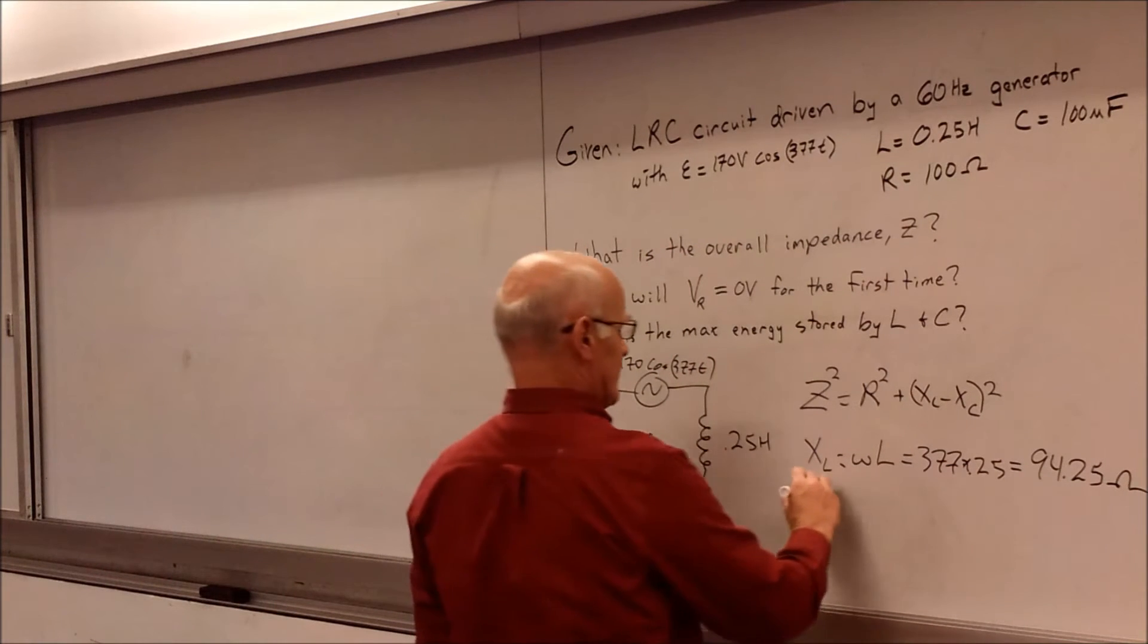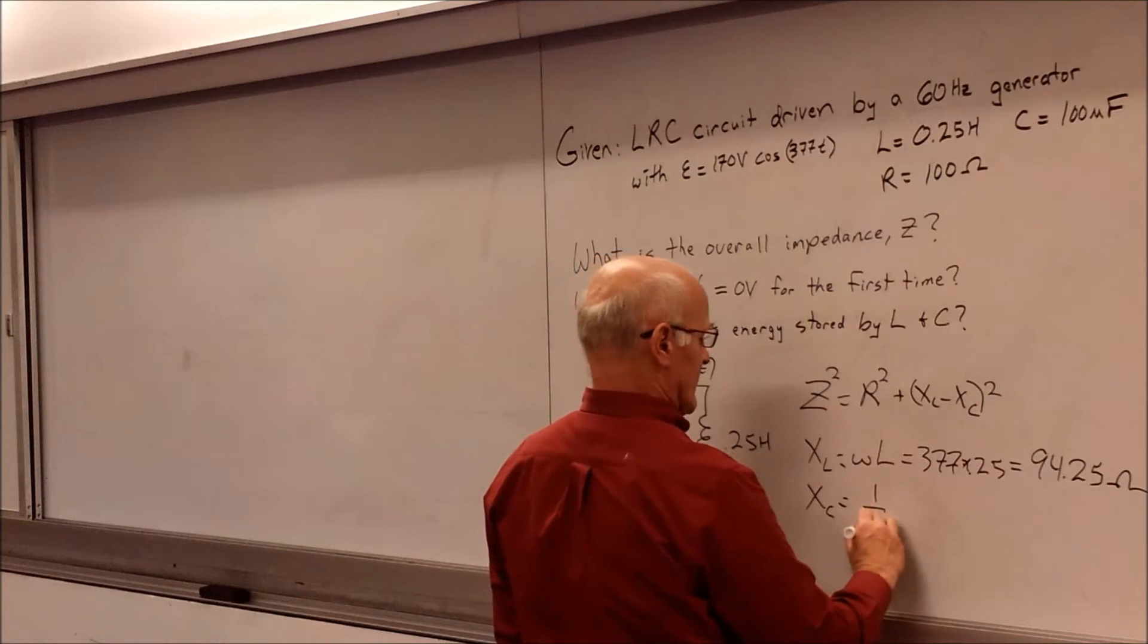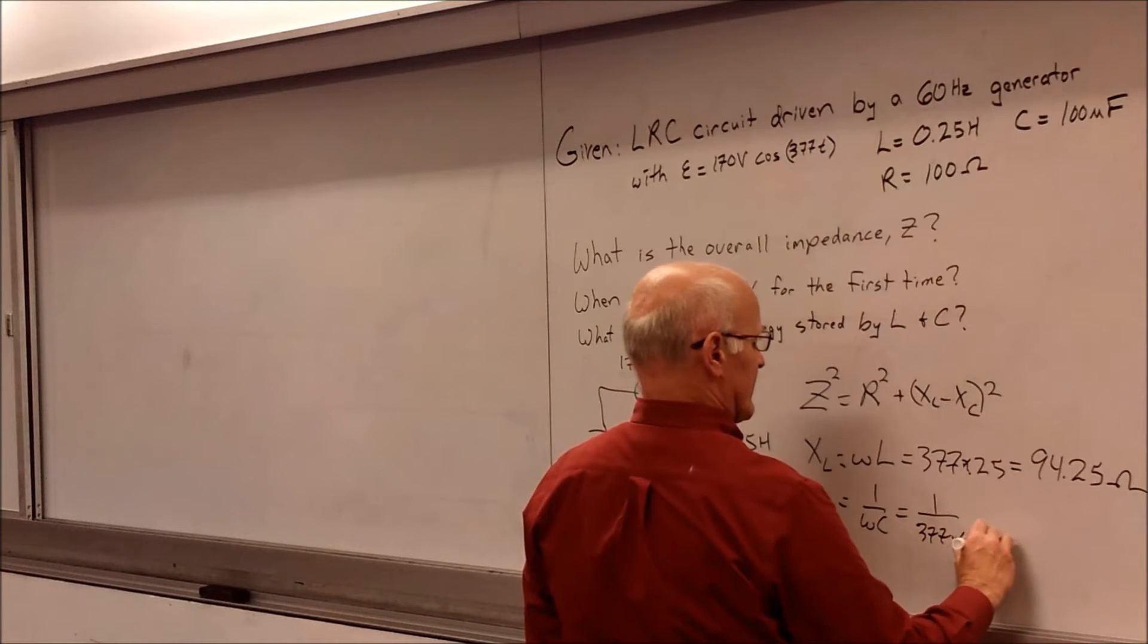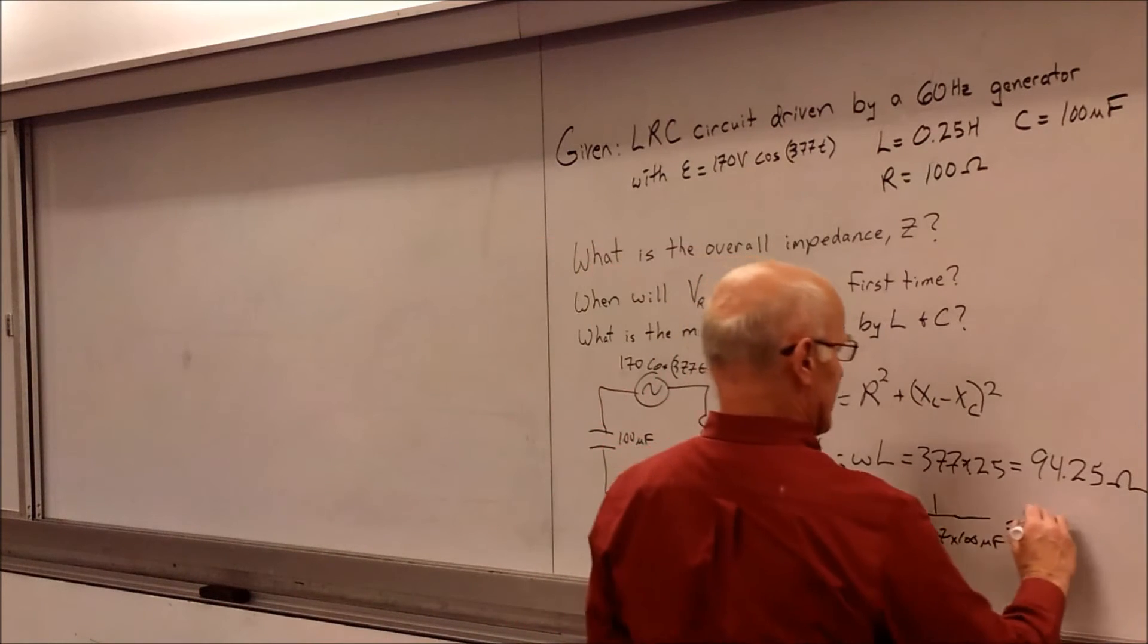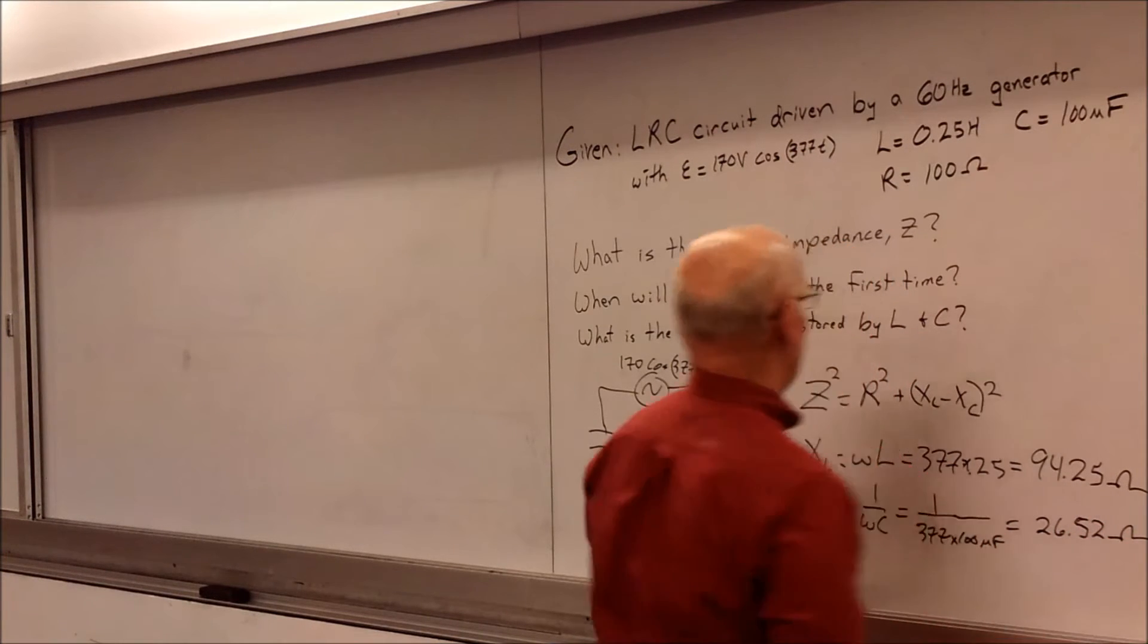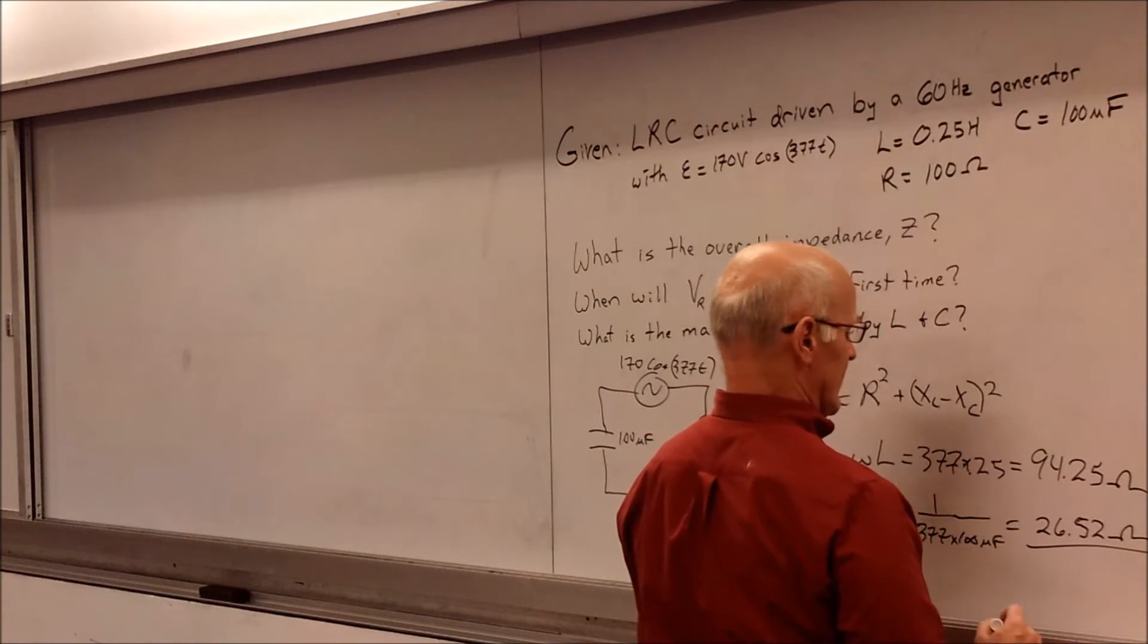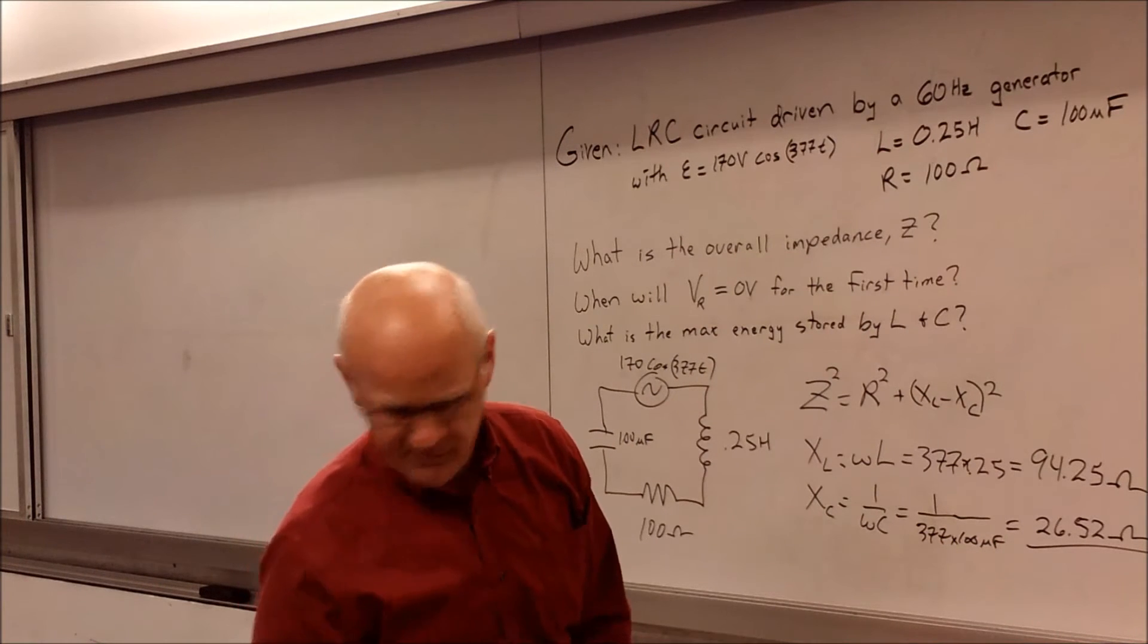And then what is XC? We can look at the capacitive reactance of our capacitor. And that's given by 1 over omega times C. So that's just simply 1 over 377 radians per second times 100 microfarads. And so when we go ahead and run that calculation out, we get a value of 26.52. And so what we want for finding out the overall impedance is to take XL minus XC. So we have that set up already. And so when we go ahead and do that, we get a value of 67.73.